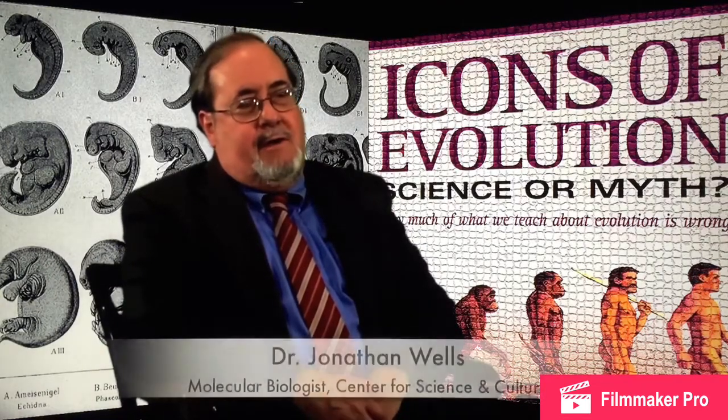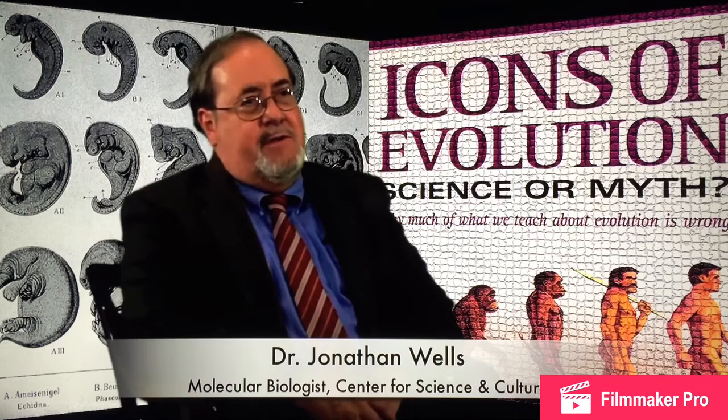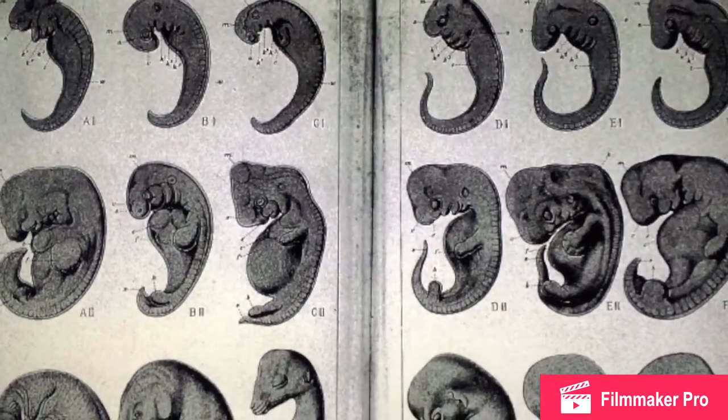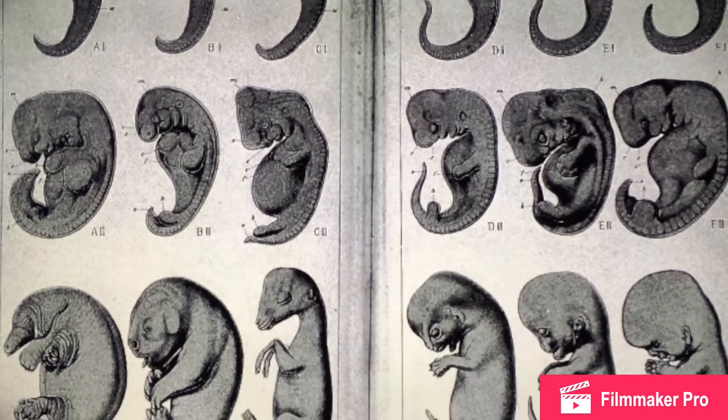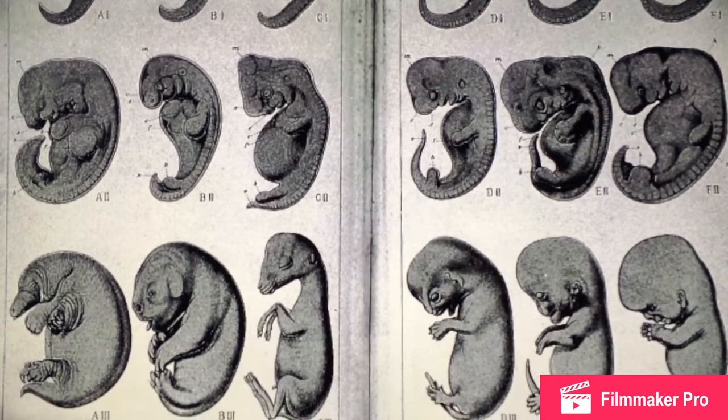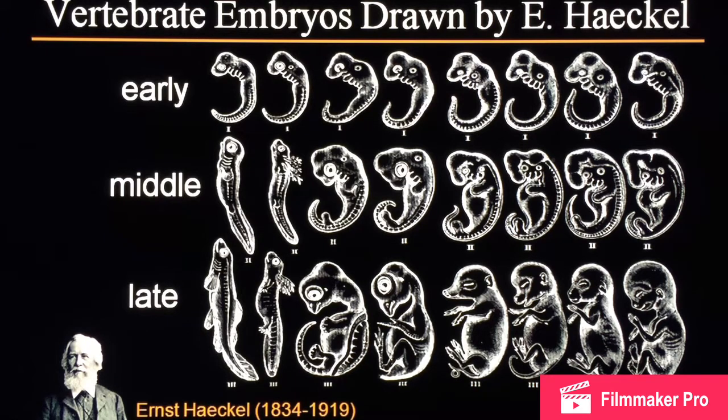Another icon I wrote about was a set of drawings made by 19th century German Darwinist Hans Haeckel of vertebrate embryos. Darwin knew that the fossil evidence was not particularly helpful to his theory, so in Darwin's own opinion, the best evidence for his theory was what we see in embryos. He believed and wrote in the Origin of Species that embryos in the same class or group are most similar in their early stages and become different only as they develop, and that the early stages show us the form of the ancestor in its original form. Hans Haeckel made drawings based on this idea.